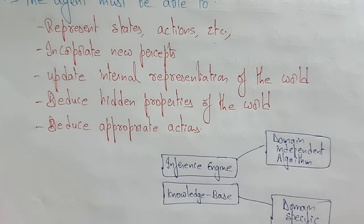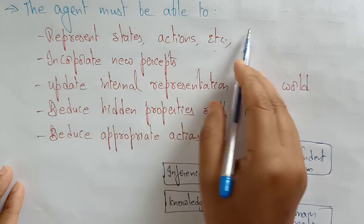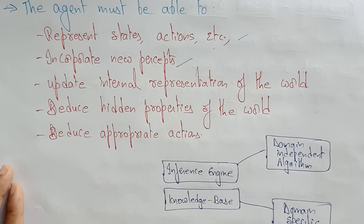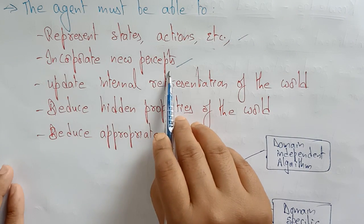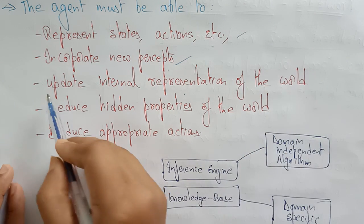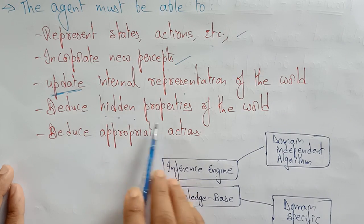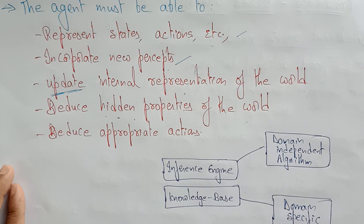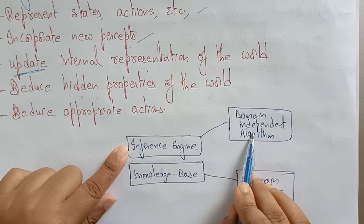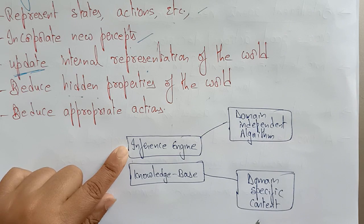That knowledge-based agent must be able to represent states, actions, and so on. It incorporates new percepts — that is the inference — and updates the internal representation of the world. It also deduces the hidden properties of the world and deduces the appropriate actions. So the knowledge-based agent is composed of the inference engine, which is a domain-independent algorithm, and the knowledge base, which is domain-specific content.